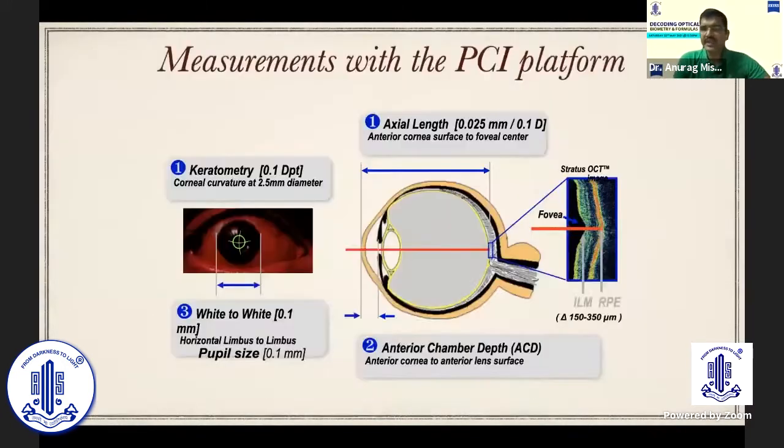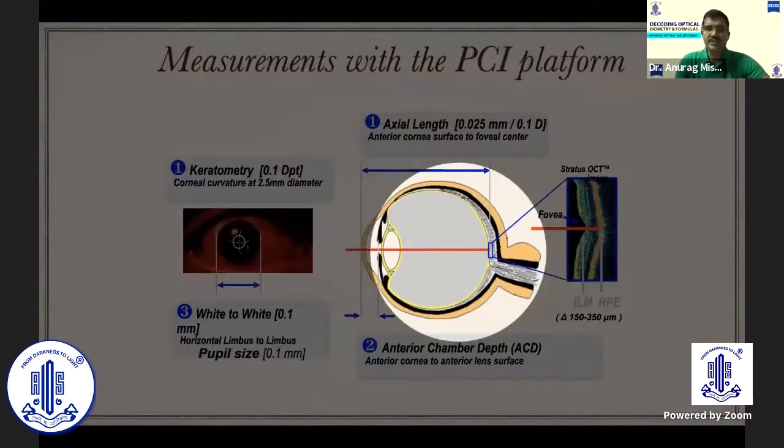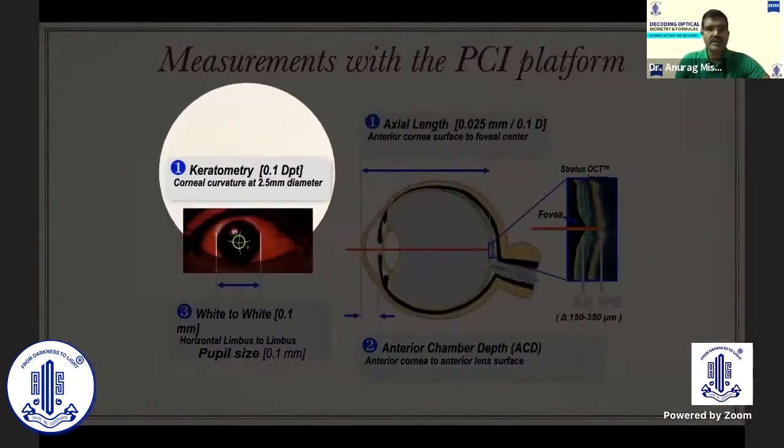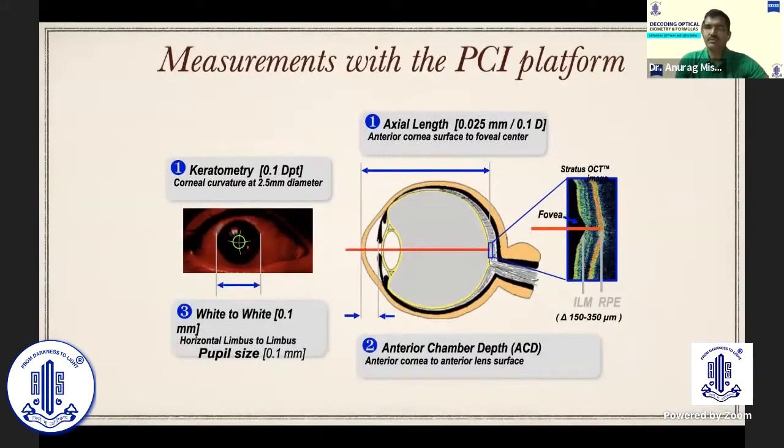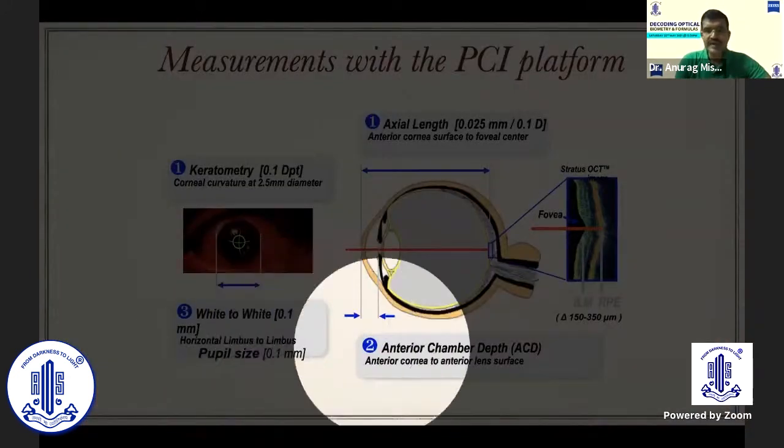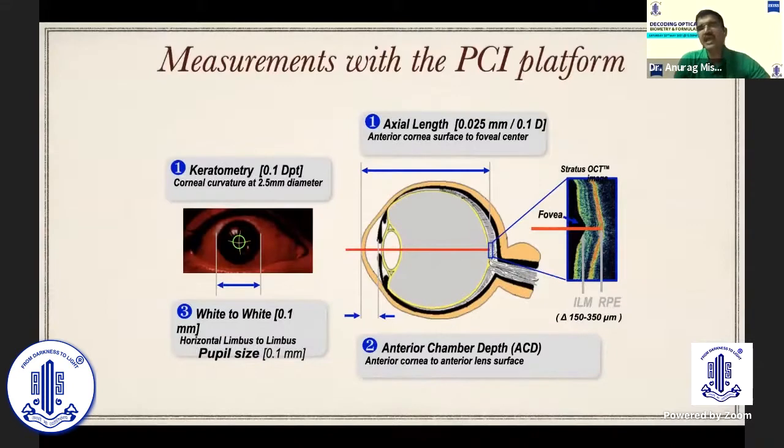It did give us very good data with very good probability ratio as well. The axiometry was superb with this machine, but where it faltered was the keratometry, which was largely reflectometer based. And it also had white-to-white and anterior chamber tests, which were approximations rather than measurements. And it also did not give us the lens thickness, which was all important for the modern day formulae to use.